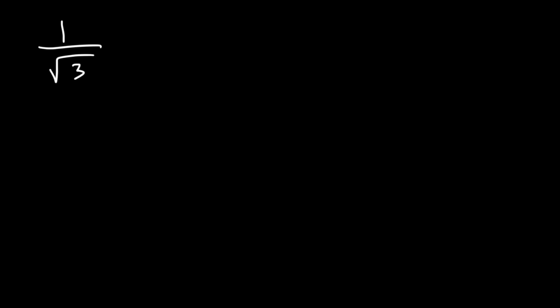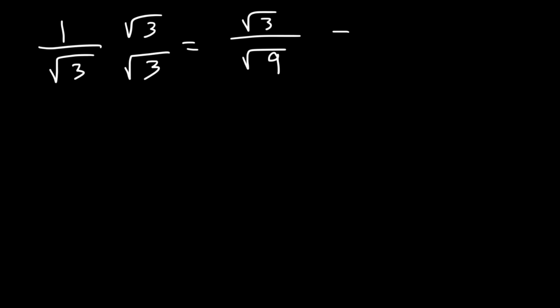Sometimes you may need to rationalize the denominator. If you ever need to rationalize the denominator, your goal is to get rid of the radical on the bottom. To do that, multiply the top and the bottom by the square root of 3. 3 times 3 is 9, and the square root of 9 is 3, and so that's how you can rationalize the denominator.